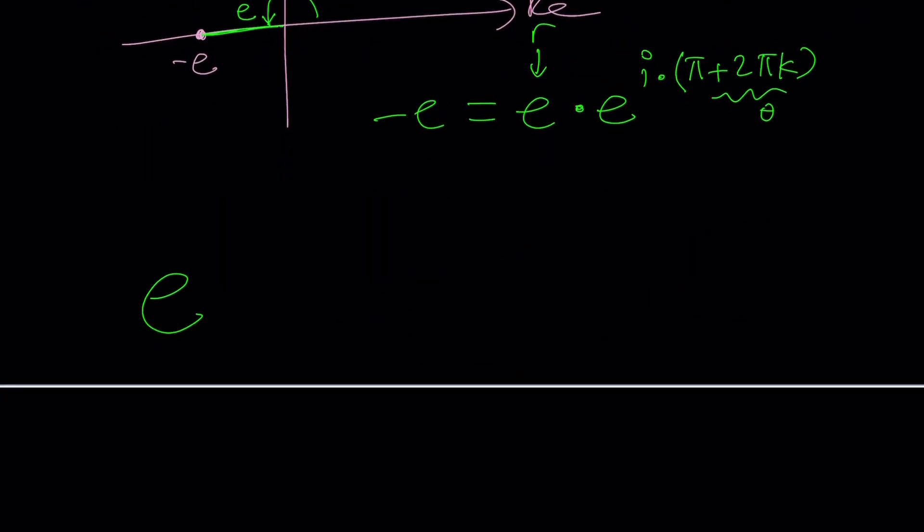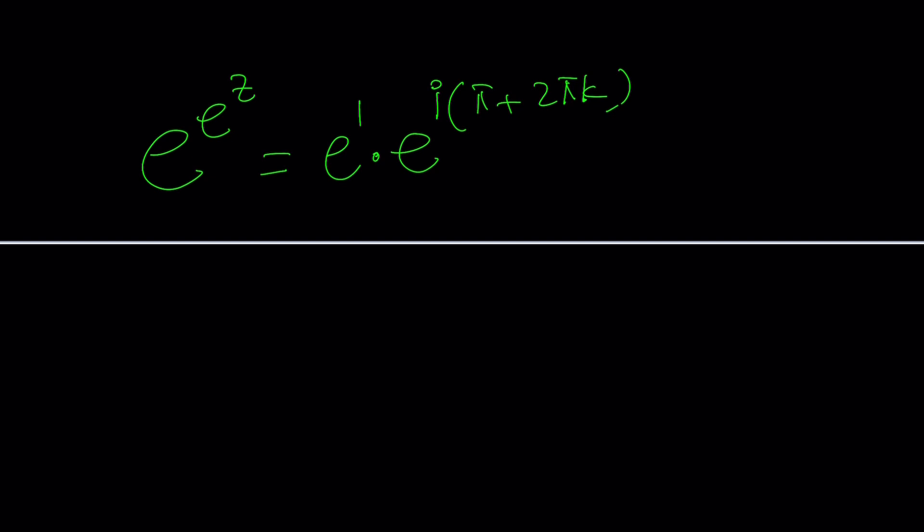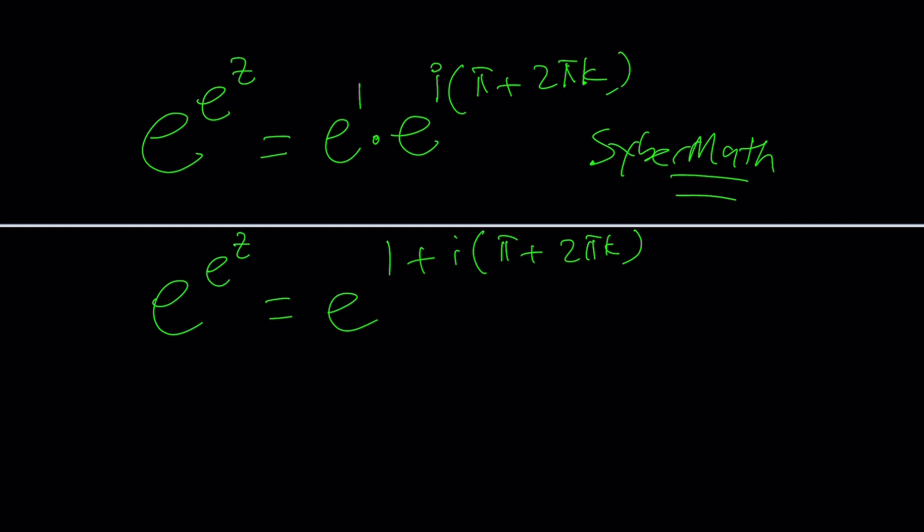Let's go ahead and plug it in. We have e to the e to the z equals e times e to the i times π plus 2πk. Don't you love the e's? Thanks to Euler we have what's called Euler's number which is amazing. This is 1. So we're going to go ahead and add the exponents. e to the e to the z equals e to the power 1 plus i times π plus 2πk. Now notice that this turned into a complex number in standard form like a plus bi which is the name of this channel by the way. And I have another channel called Cyber Math.